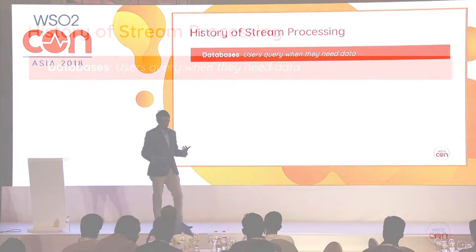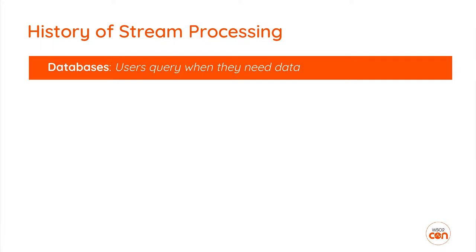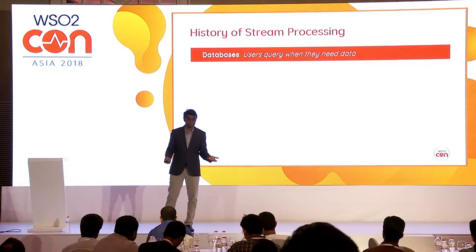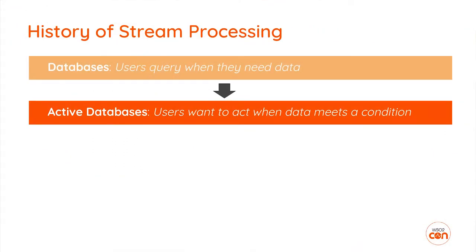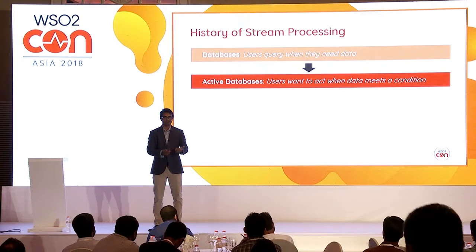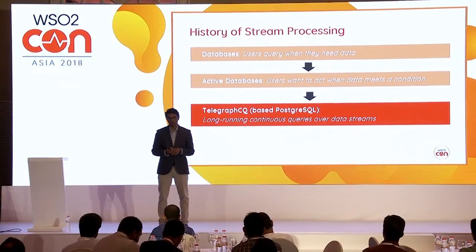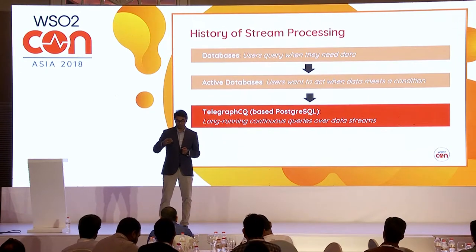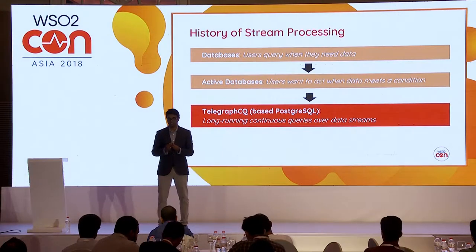Looking at the history of how streaming SQL and stream processing evolved: initially we had databases, everything was stored, and we periodically polled the database to see whether things changed. Then people wanted to build active databases — you give a query and the database triggers you when a condition is met. After that, they took Postgres SQL and converted it into TelegraphCQ, which was the first stream processing system where you define a query and as data comes in, it immediately gives you a notification. It's not like a database — it's more of an in-memory-based system.